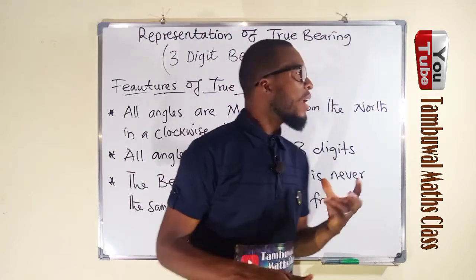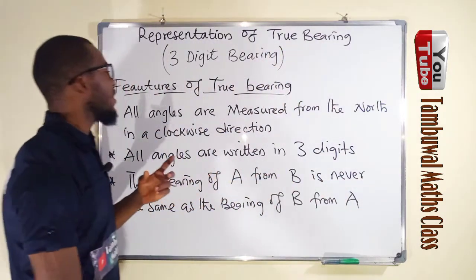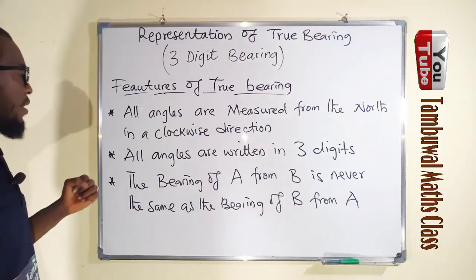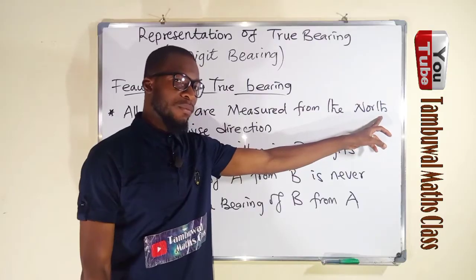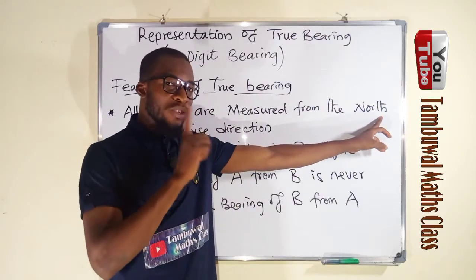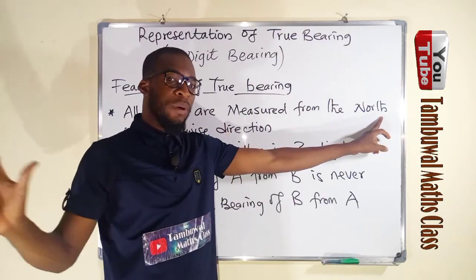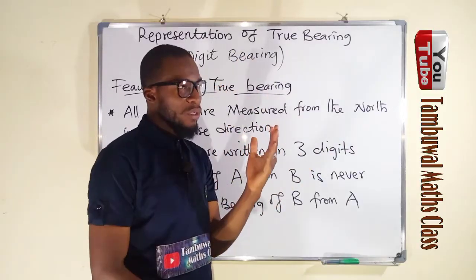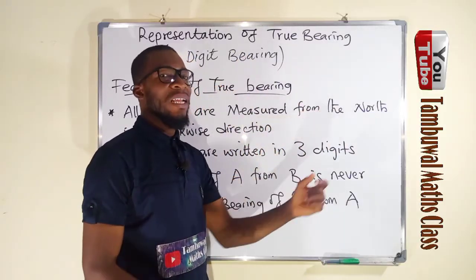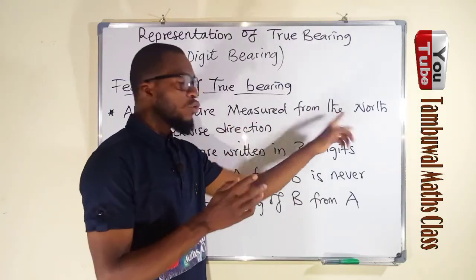Before we start, there are some key features of this true bearing that I would like you to understand. Number one, all angles are measured from the north, unlike in compass bearing that we either measure them from the north or from the south. But in true bearing, they are only restricted to the north.